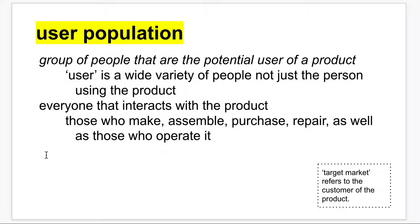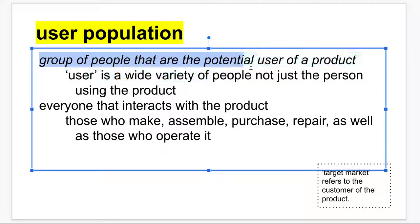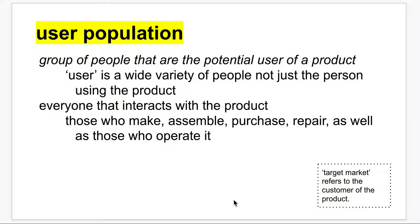Remember that user groups have different criteria or characteristics. Just so you understand, there is a difference between a target market and a user population. The user population is a group of people that are potential users of a product — essentially anybody that interacts with it: they assemble it, purchase it, repair it. It's a very wide population. But the target market is usually specific to somebody who purchases or is the customer of that product. So the target market relates more to advertising; the user population is more related to use.